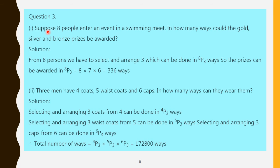Question number 3: 8 people enter an event in a swimming competition. In how many ways could the gold, silver, and bronze prizes be awarded? There are 8 persons and we want to give 3 prizes. The first prize can go to any one of 8 candidates — 8 possibilities; second prize: 7; third prize: 6. Therefore it is 336 ways. Another way: select and arrange 3 persons from 8, which is 8P3. Starting with 8 and writing 3 decreasing numbers: 8 × 7 × 6 = 336.